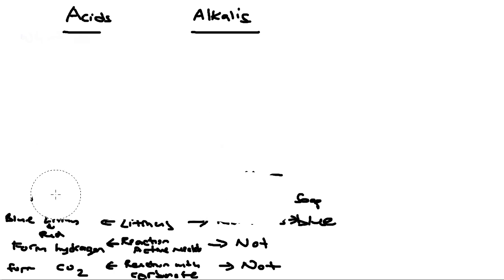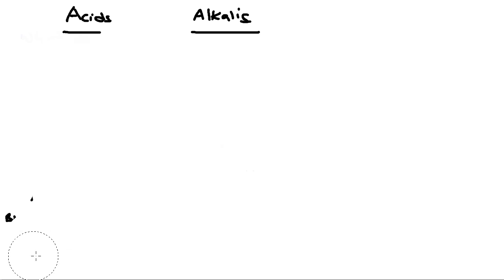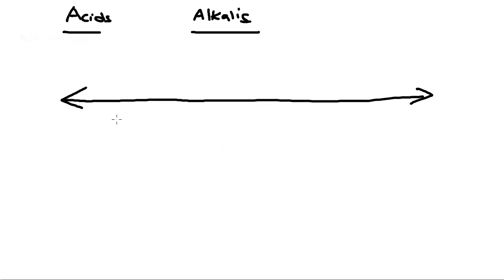So how do we differentiate and measure the acid and alkalines and how strong they are? We actually use a method called the pH system or the pH scale. Essentially, it is a scale from 0 all the way to 14. All the way to the left, we have the strongest acids. At 7, it's called a neutral point, where pure water is. Pure water is neither an acid or an alkaline. 14 is the strongest alkaline.